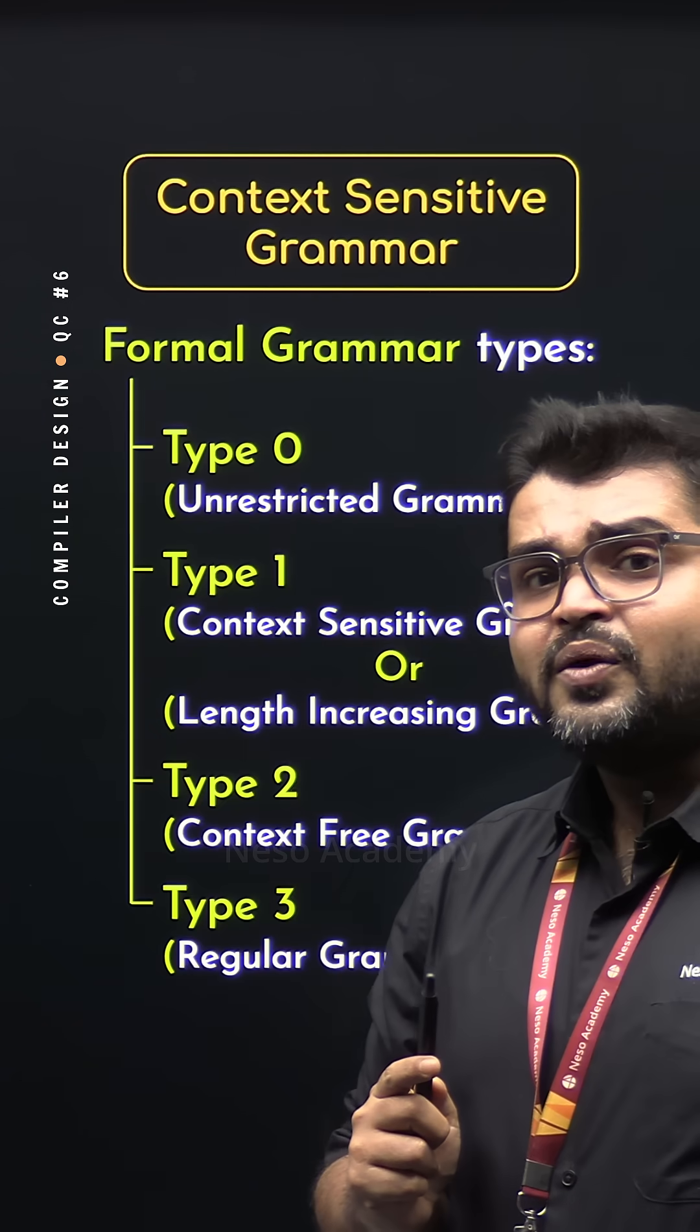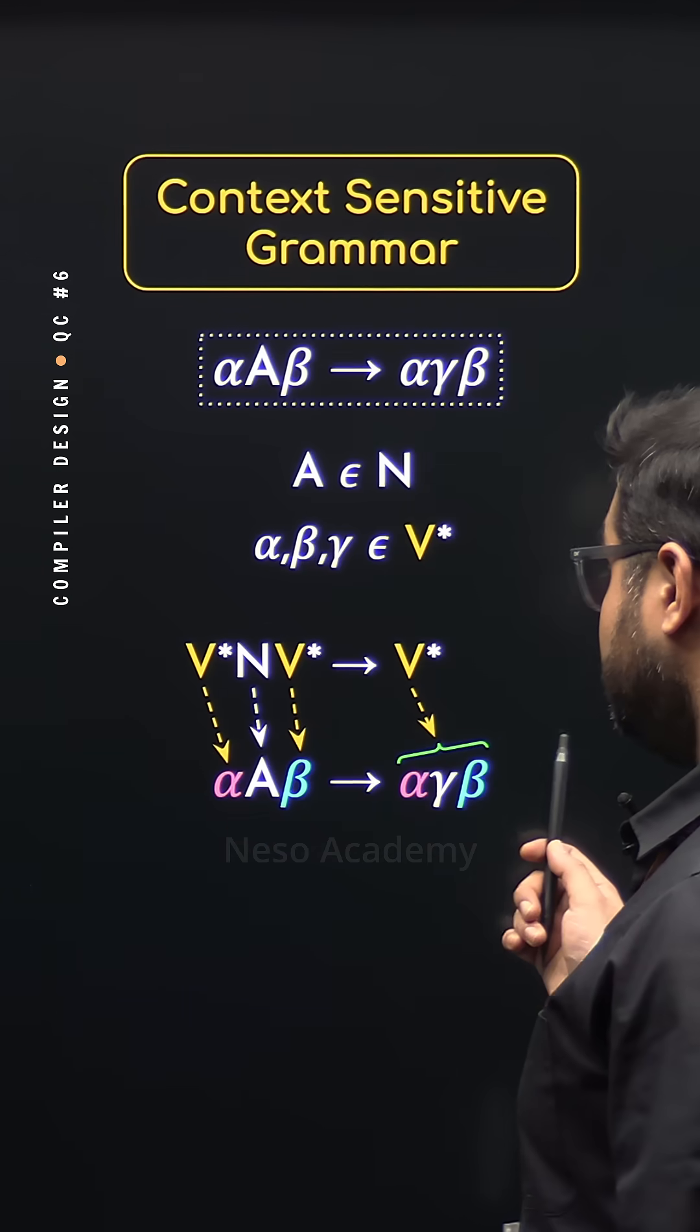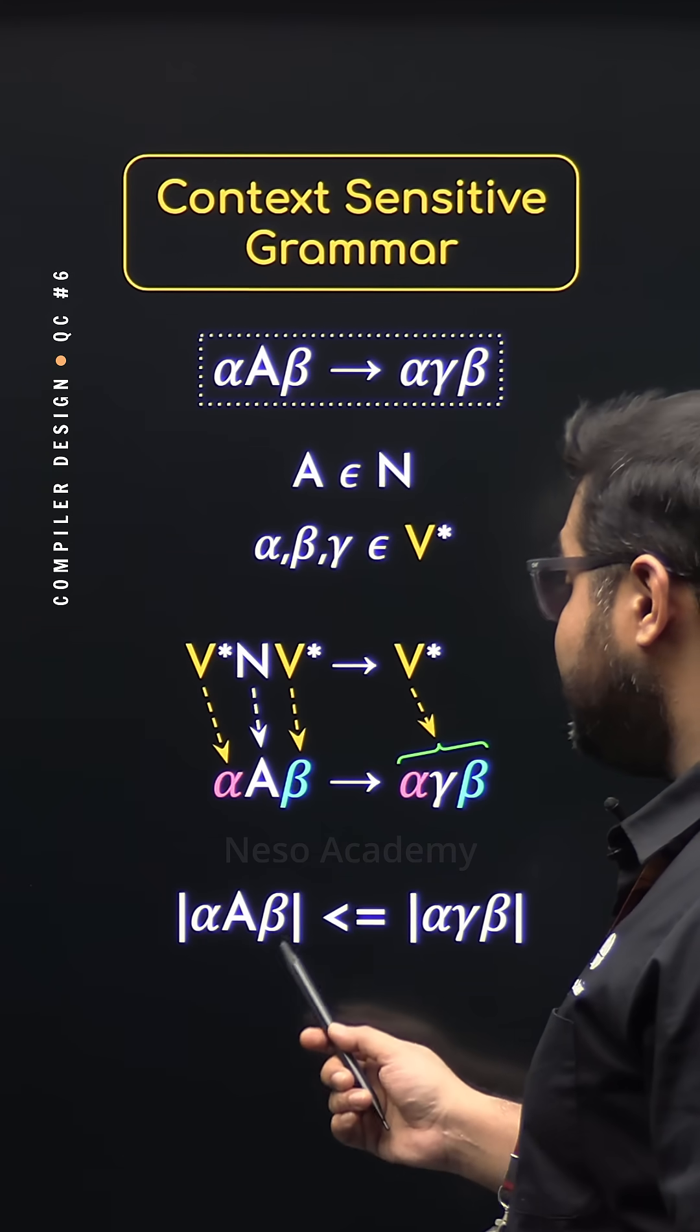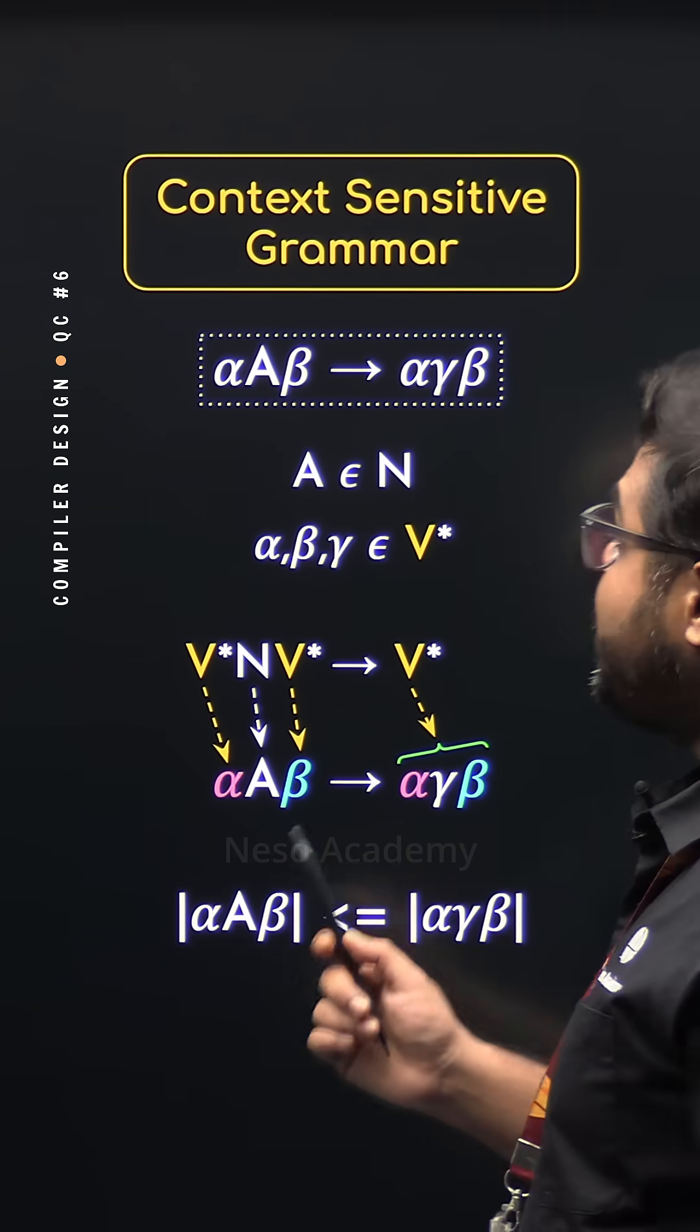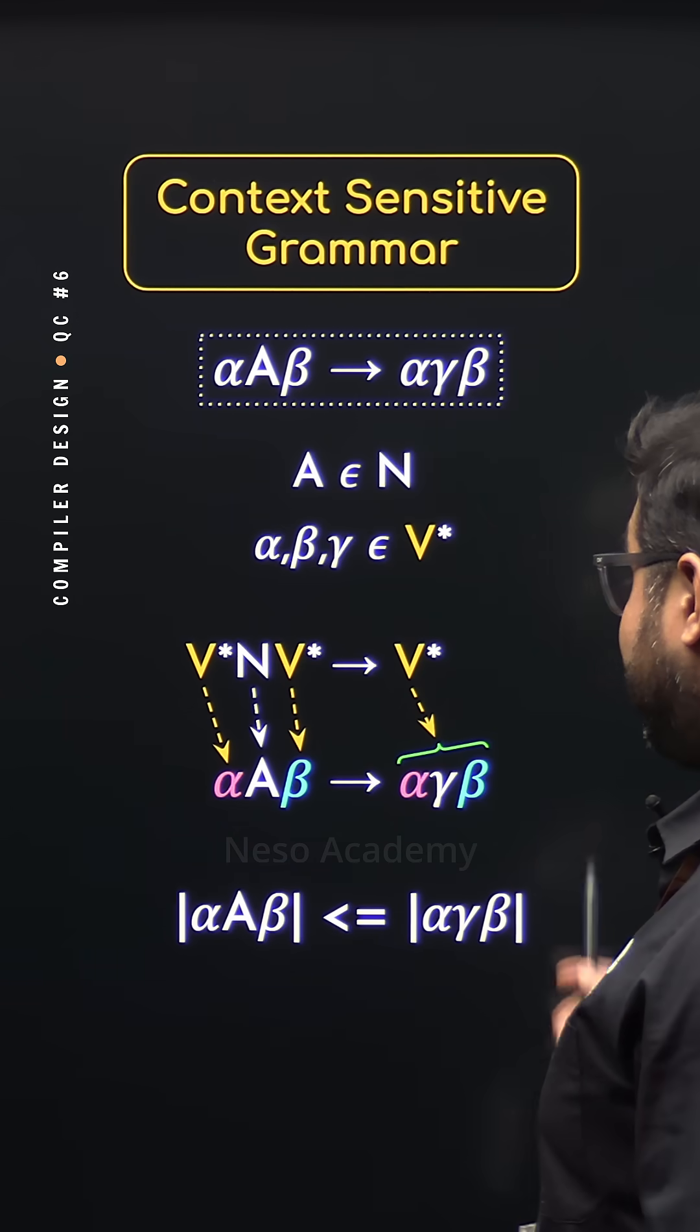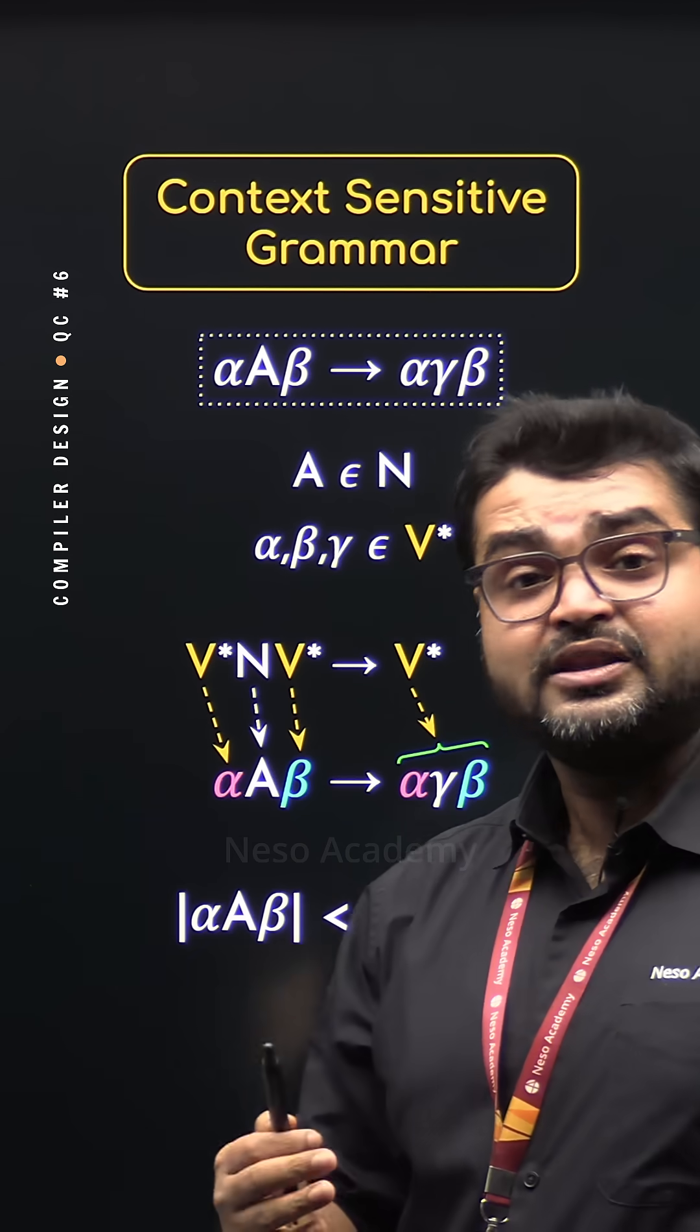Let's now learn why the same grammar is called length-increasing grammar. And that is because, along with the new form of production rule, we also have a restriction imposed on this. That is, mod of alpha A beta is less than equals to mod of alpha gamma beta. That is, whatever we have on the left-hand side of the production rule must have lesser number or at least equal number of elements than that of the right-hand side. So, whenever we will generate the right-hand side from the left-hand side, the length will only increase.